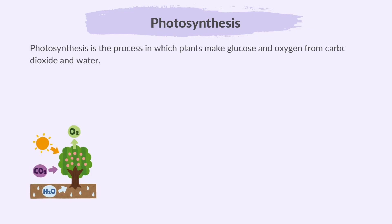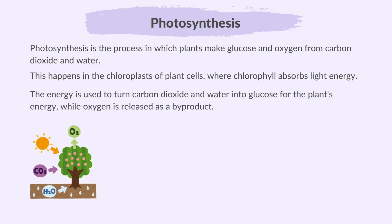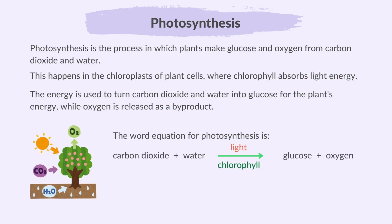Lastly, let's talk about photosynthesis. Photosynthesis is the process in which plants make glucose and oxygen from carbon dioxide and water. This happens in the chloroplasts of plant cells, where chlorophyll absorbs light energy. The energy is used to turn carbon dioxide and water into glucose for the plant's energy, while oxygen is released as a by-product. The word equation for photosynthesis is: carbon dioxide + water → glucose + oxygen. And this is the symbol equation for photosynthesis.